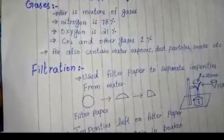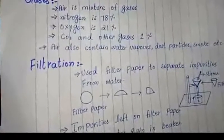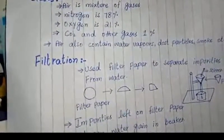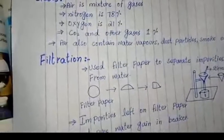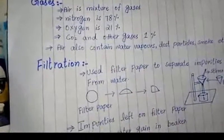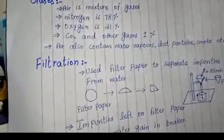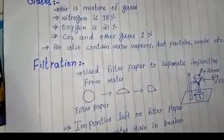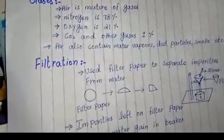Next, separating mixtures. Mixtures ko alag kis tarah se kia ja sakta hai? Humne pichle pada ke compounds jo hain woh elements se mil kar bante hain aur jo mixture hain woh substances se mil kar bante hain. Compounds me mojood elements ko alag karna mushkil hota hai aur jaise hi woh compound me convert hote hain their properties will be changed. Lekin mixture me jo substances add karte hain unki properties waise hi rehti hain.